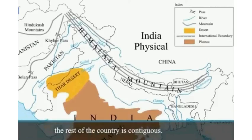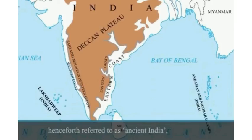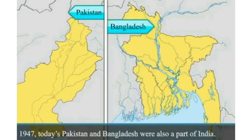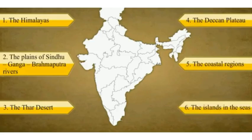We have studied the ancient history of India. The history of India before 1947 includes today's Pakistan and Bangladesh, which were also a part of India. The following regions are seen to be important when we look at the course of Indian history: 1st, the Himalayas; 2nd, the plains of Sindhu, Ganga, and Brahmaputra; 3rd, the Thar Desert; 4th, the Deccan Plateau; 5th, the coastal region; 6th, the islands.